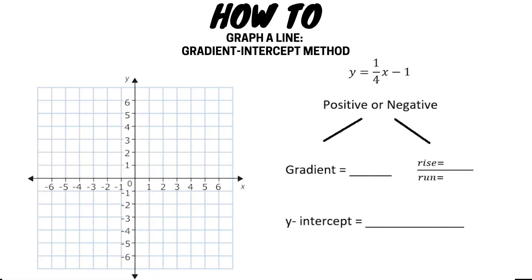This video is going to demonstrate how to graph a straight line using the gradient intercept method. In the first example we are going to graph the line y equals a quarter x minus one.